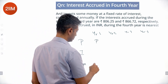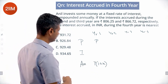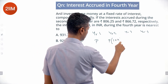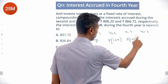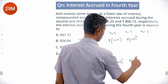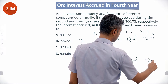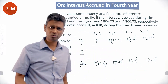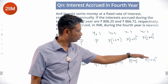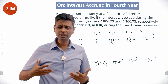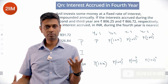The principal is P. The amount at end of year 1 is P(1+x), where x is R/100. Year 2 amount is P(1+x)², year 3 is P(1+x)³, year 4 is P(1+x)⁴. That's how compound interest works — the amount each year is the previous principal multiplied by (1+x). That's why compounding kicks in.